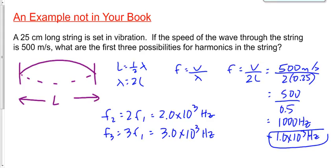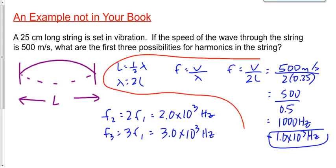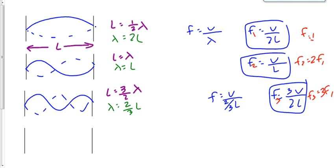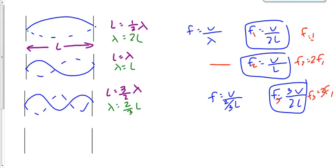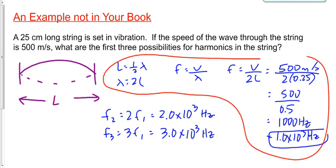On Friday we completed the example. The one thing I wanted to point out: when looking for the first three harmonics, the first harmonic is found by deriving the equation — F equals V over lambda, or V over 2L. You can find the value of the second harmonic by deriving its equation, or — the way I'd suggest — once you have the first harmonic value, in this case 1,000 hertz, multiply it by 2, because the second harmonic is always twice the first.